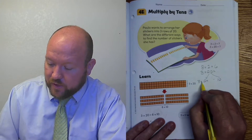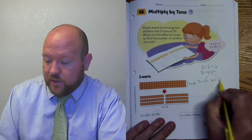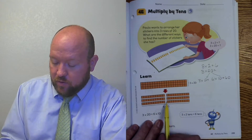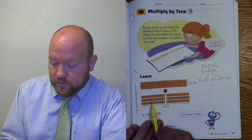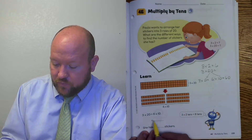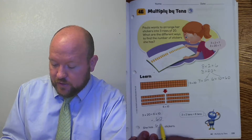So 3 times 2 is 6, and 6 times 10 equals 60. We can see that down here — we break it up into 6 groups of 10, and 6 times 10 is 60. So she has 60 stickers.